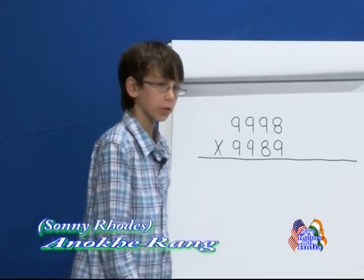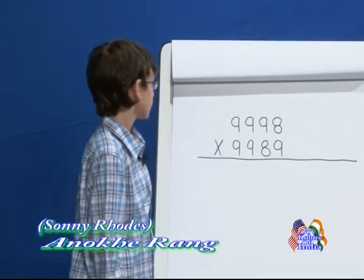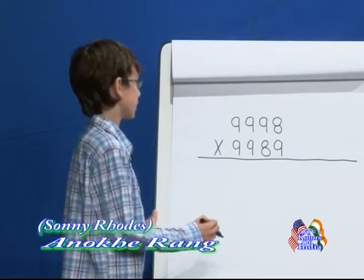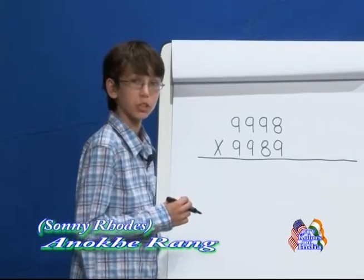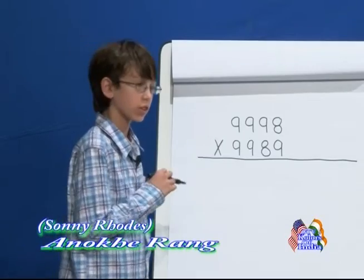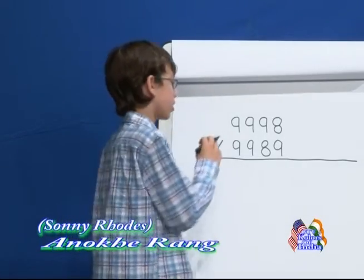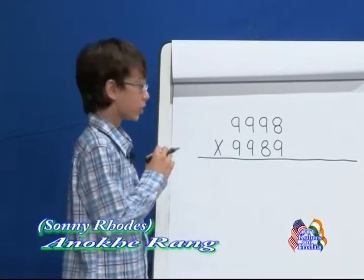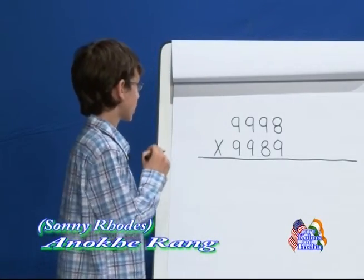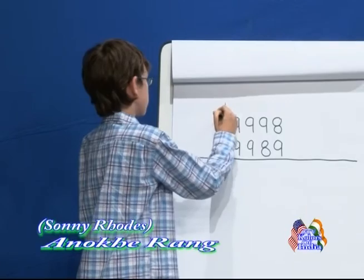Thank you. That was quick. And now, Sunny will explain the steps in solving the problem. The first step is to find a base, which is usually a power of 10 and is close to both numbers. So, in this case, it would be 10,000.